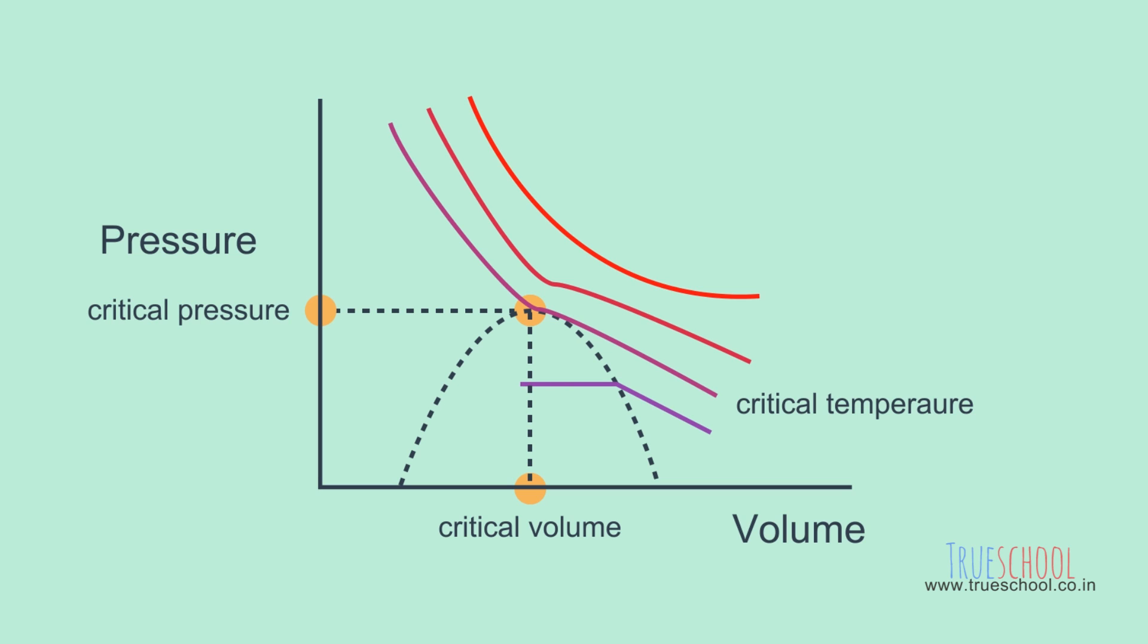Here the volume keeps decreasing without any change in pressure till the gas gets completely condensed. The constant pressure is called vapor pressure of the liquid.